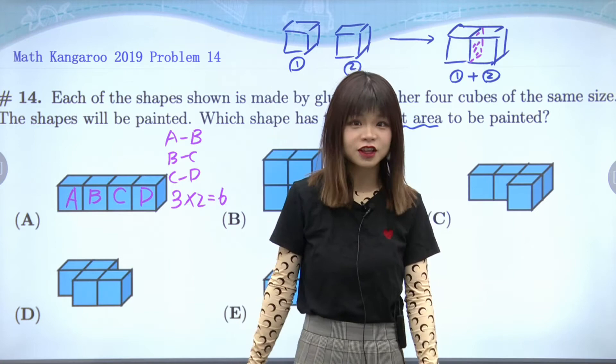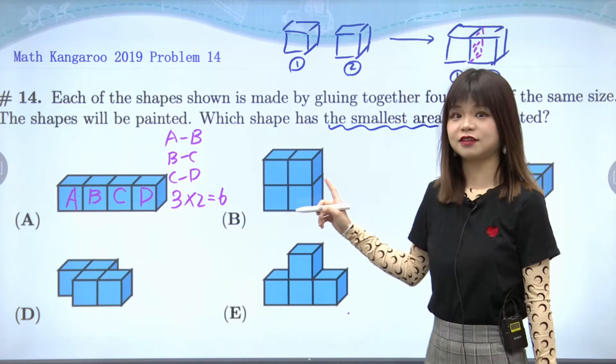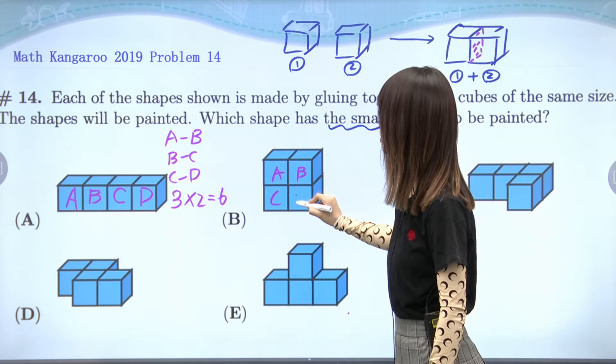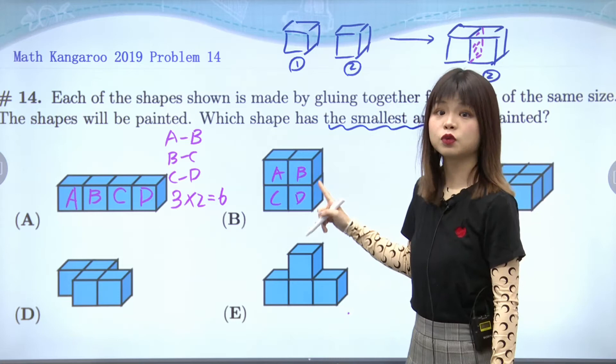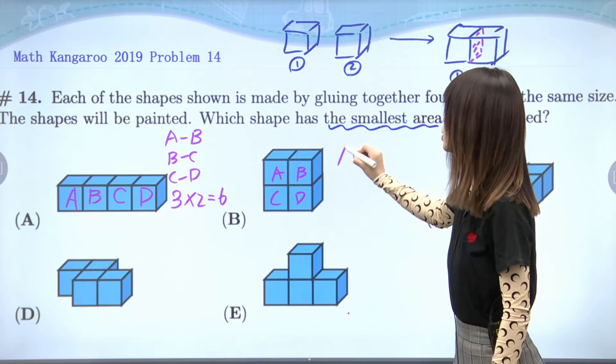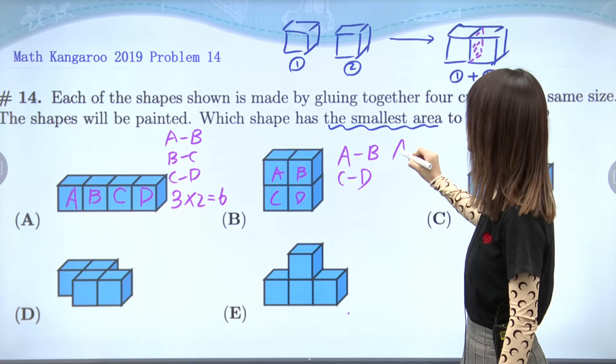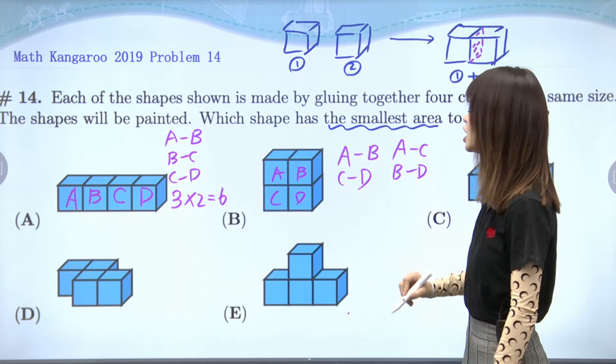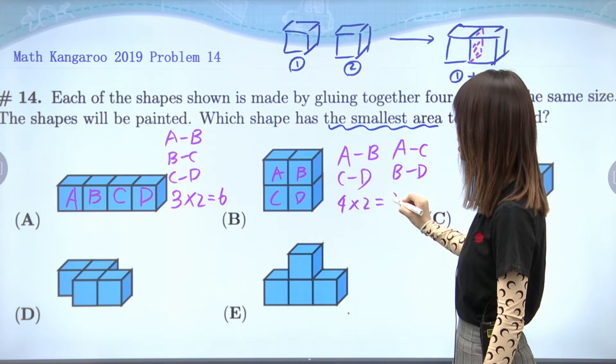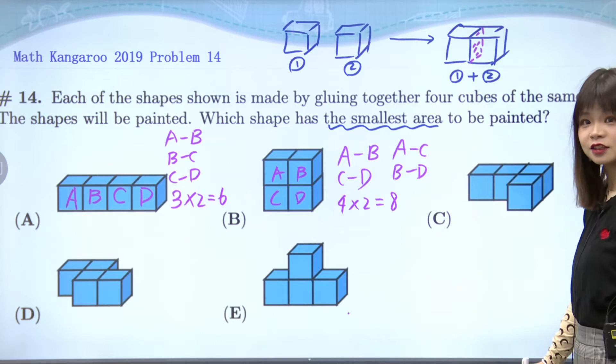Now everyone knows how to find the number of hidden faces! How about the second one — how many hidden faces do we have? Let's find them in order, starting with the horizontal connections. A and B are connecting, and C and D are connecting. Then for the vertical ones, A and C are connecting, and B and D are also connecting. So in total we have four times two equals eight hidden faces.